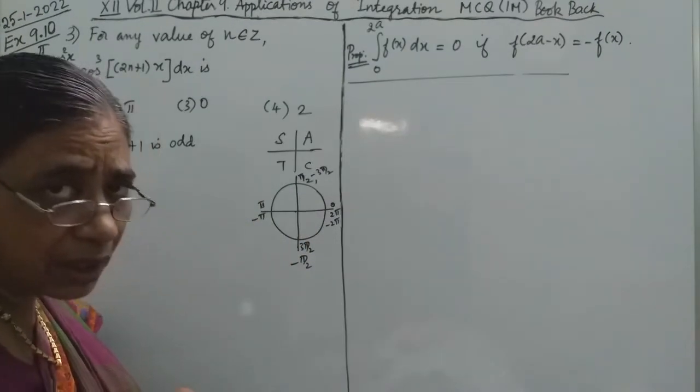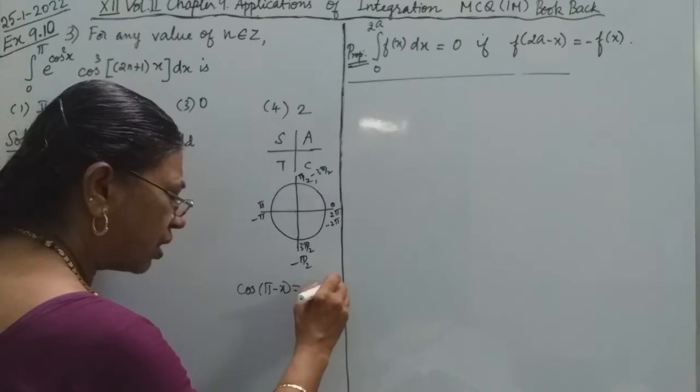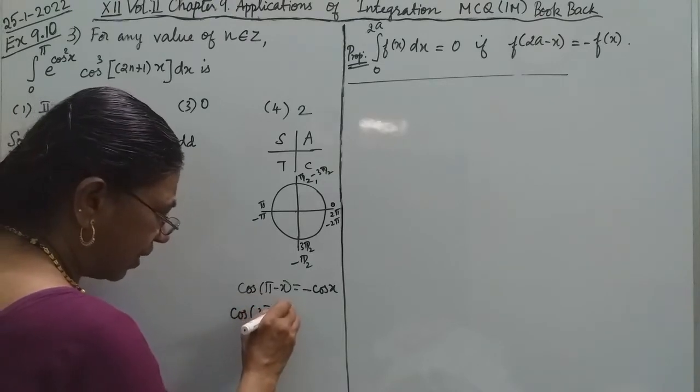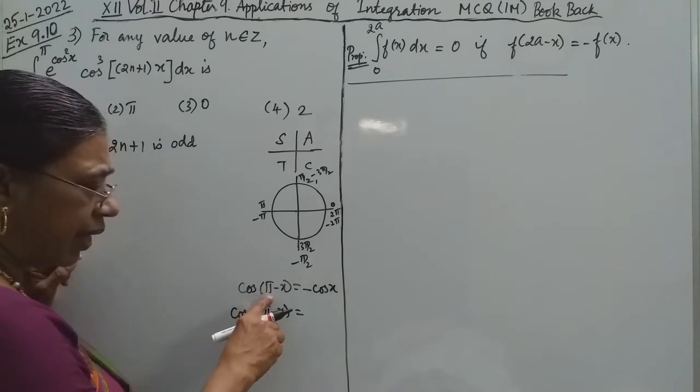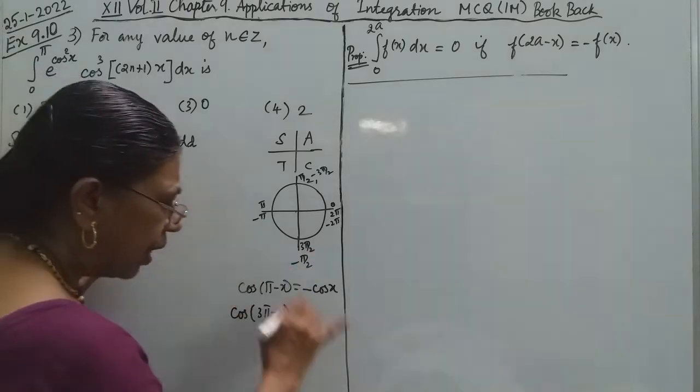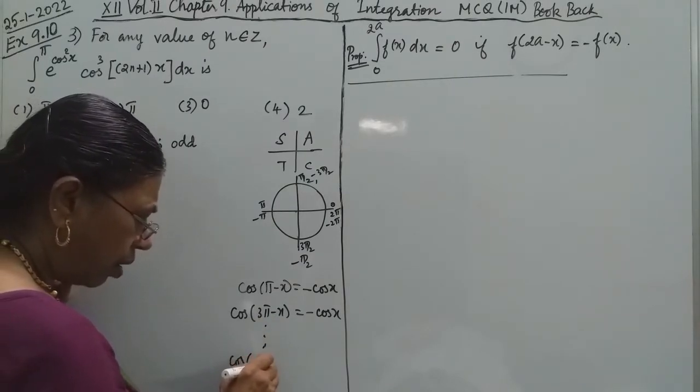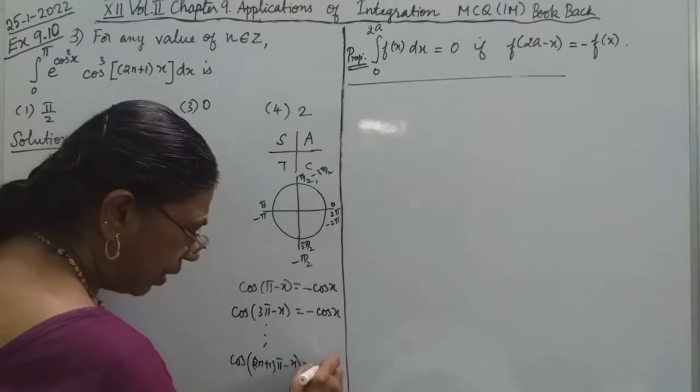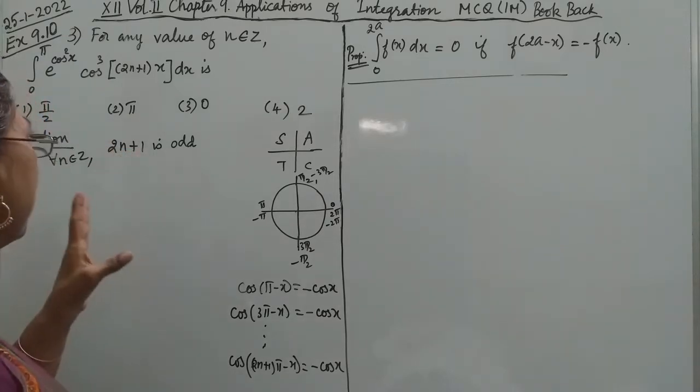In the second quadrant cosine is negative. So what do you mean by cos(π-x)? That is nothing but -cos(x). What about cos(3π-x)? That is odd multiples of π. So this is true for all odd numbers. So (2m+1)π-x will be important.